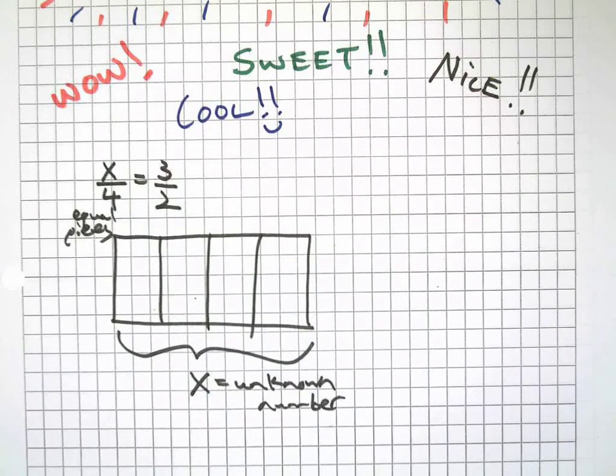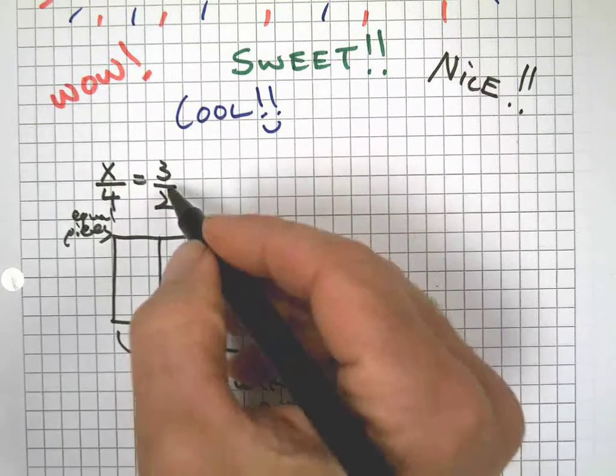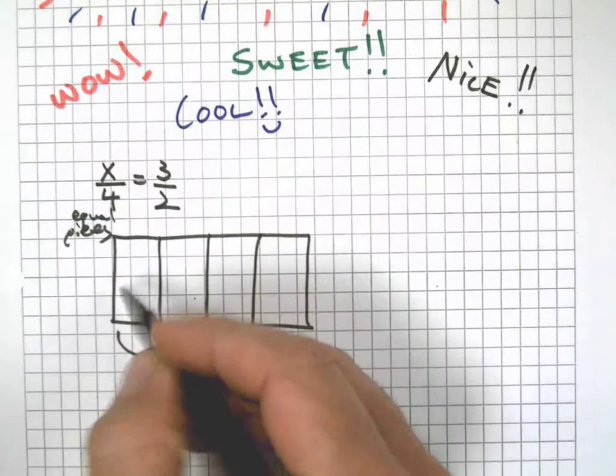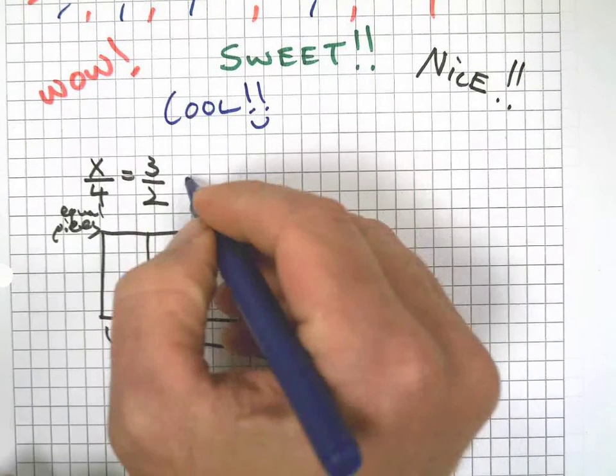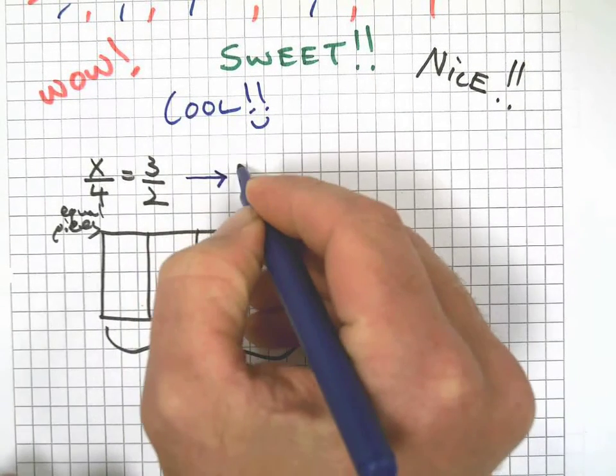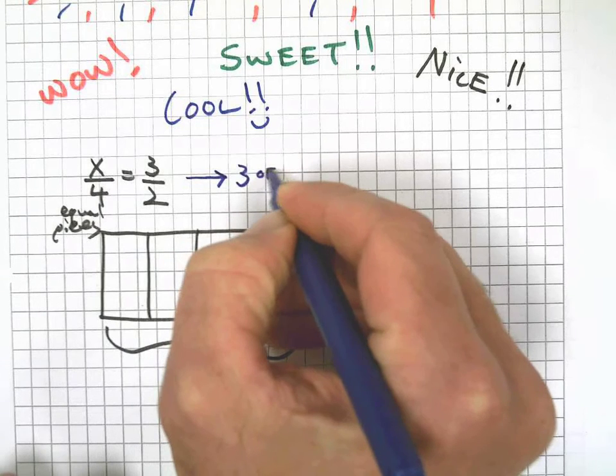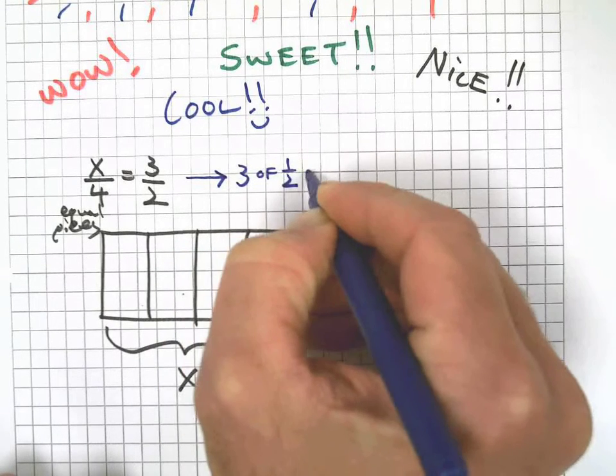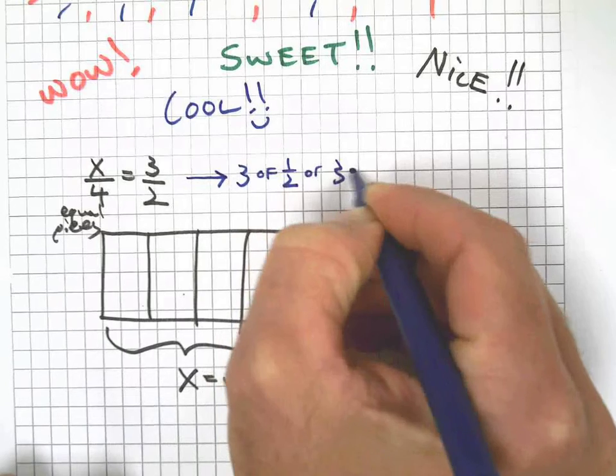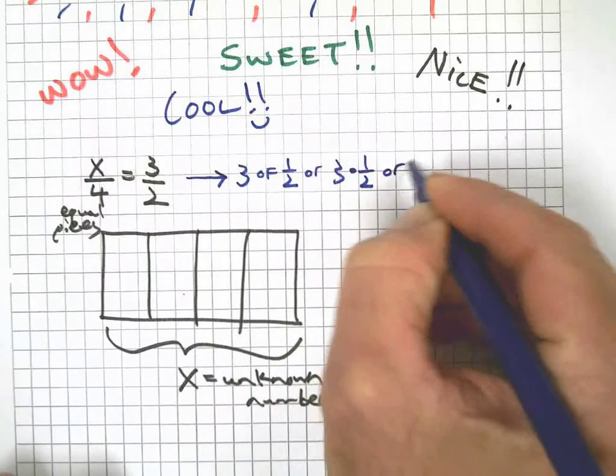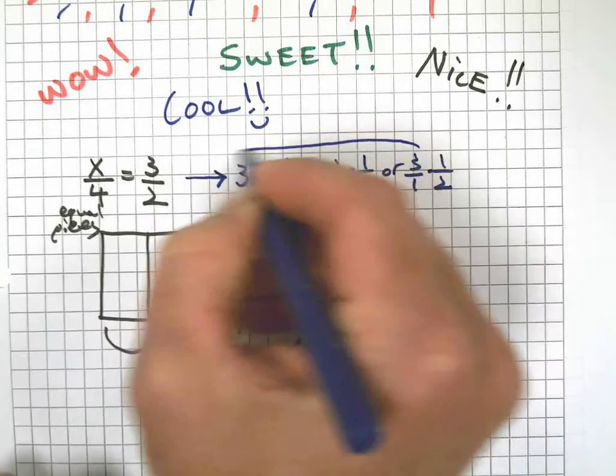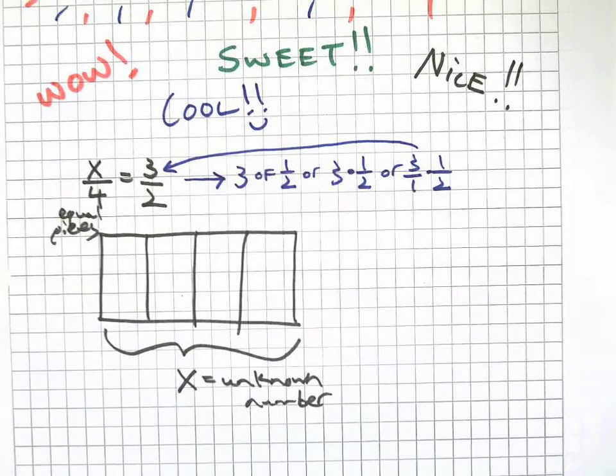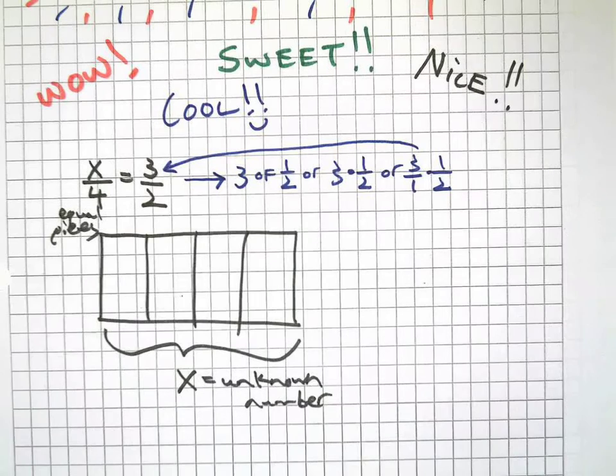Now the problem says each one of these pieces is worth three halves. Let's do a side trip over here. Three halves really means three of one half, or three times one half, or three over one times one half, which gets us back to three halves. It's important to understand what three halves really means. It's three of one half.